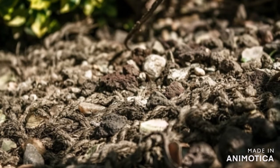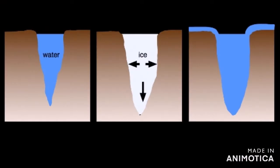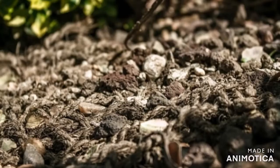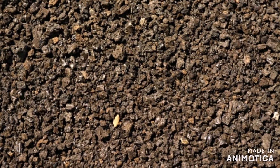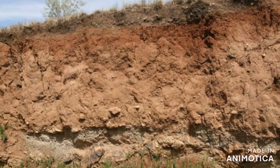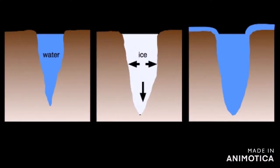Now let's see what is mechanical weathering. Mechanical weathering is also called physical weathering and disaggregation. Mechanical weathering is the process of breaking big rocks into little ones. This process usually happens near the surface of the planet. The key agent of mechanical weathering is water in solid and liquid form.